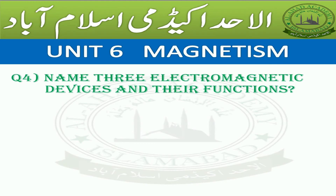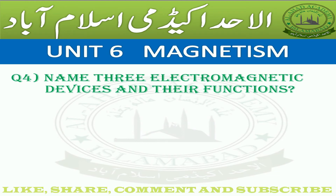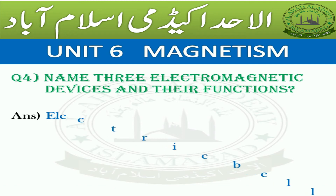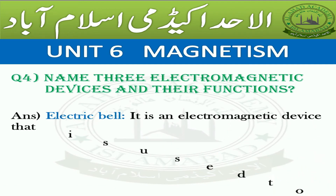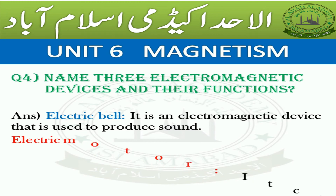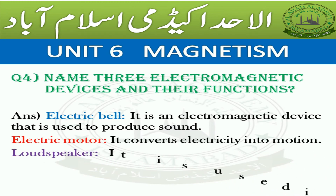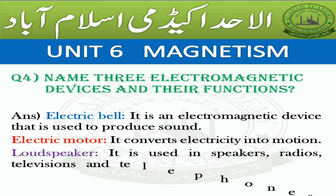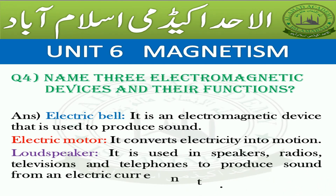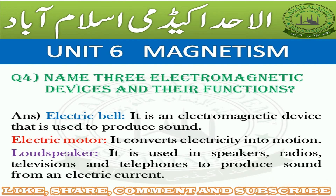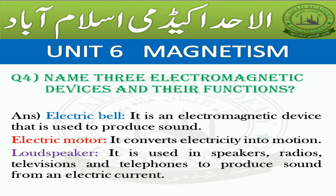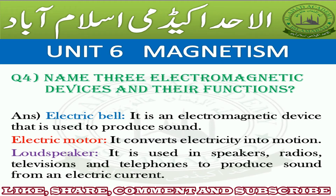Question Number 4: Name 3 electromagnetic devices and their functions. Answer: Electric Bell — it is an electromagnetic device used to produce sound. Electric Motor — it converts electricity into motion. Loudspeaker — it is used in speakers, radios, televisions, and telephones to produce sound from an electric current.